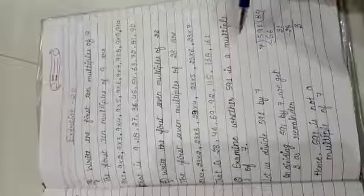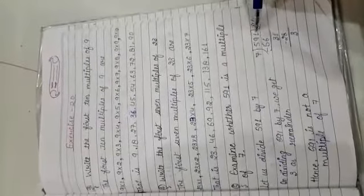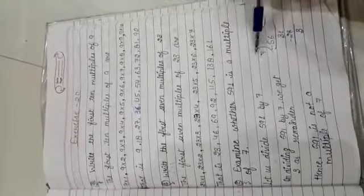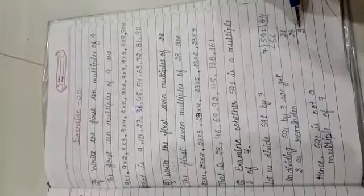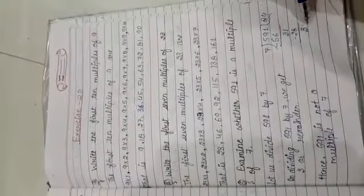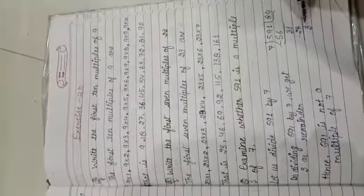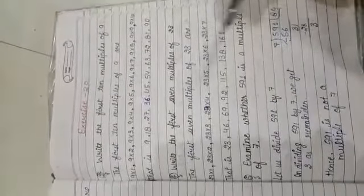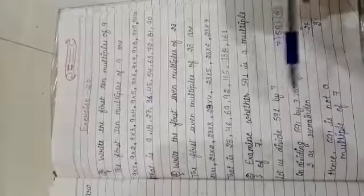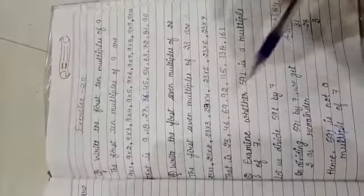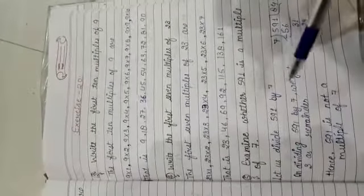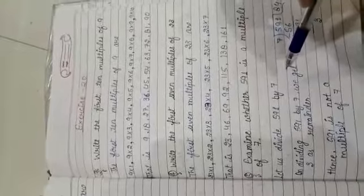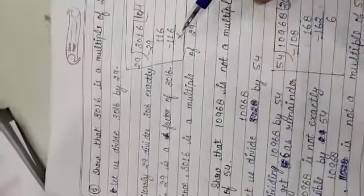In previous question, when we divided 591 by 7 and checked, after division we got a remainder. So if we get a remainder, then it will neither be a factor nor a multiple of that number. And if it is exactly divided and no remainder is added, then it will be both a multiple and factor.